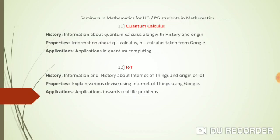The next topic is the Internet of Things (IoT), which may or may not be considered part of mathematics depending on the student's choice. You can cover the origin of IoT and how today's world is totally based on the internet. For example, nowadays we have fans with remote controls featuring one-hour, two-hour, three-hour, and four-hour timer durations — that is an application of the Internet of Things. You can also cover related real-life problems.